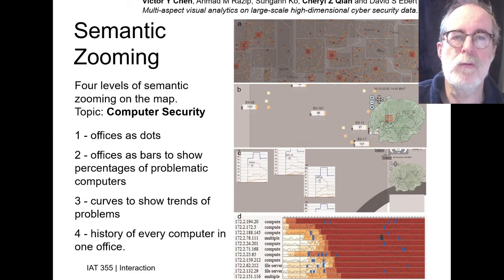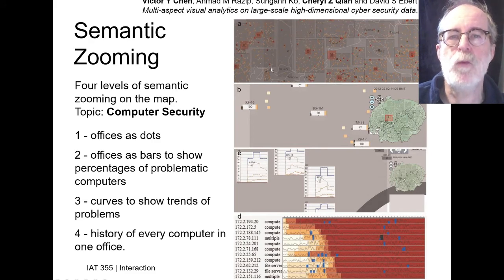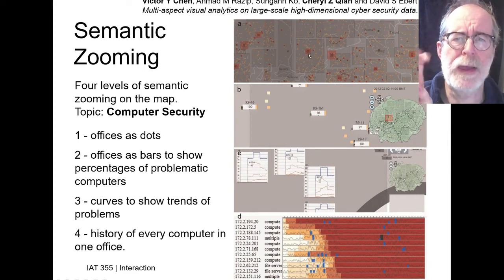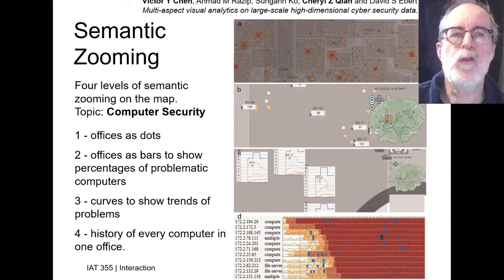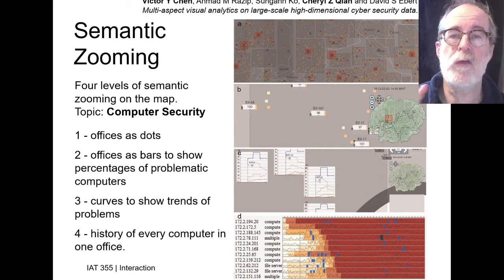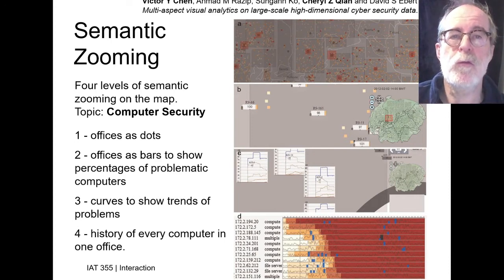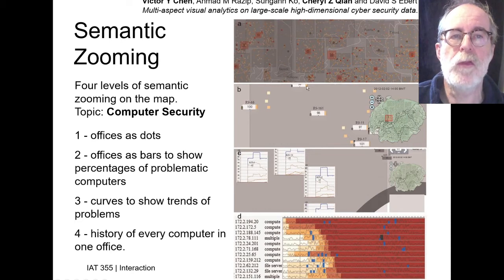At the coarsest zoom level, tiny dots represent offices where computers are located, and squares represent offices with many problematic computers. When zoomed into a location, extra white space is added between individual offices to allocate more room for visual detail. Each office gets a bar indicating the level of 'badness' — percentage of problematic computers — and offices with equal-height bars have equal levels of problems.